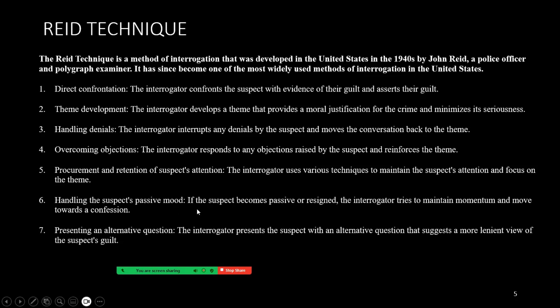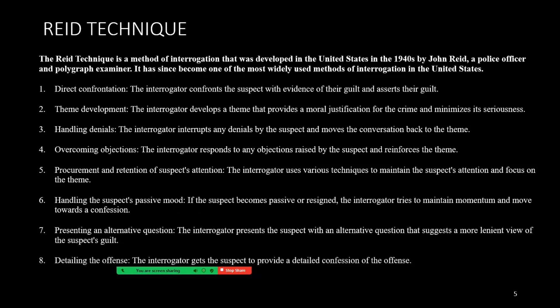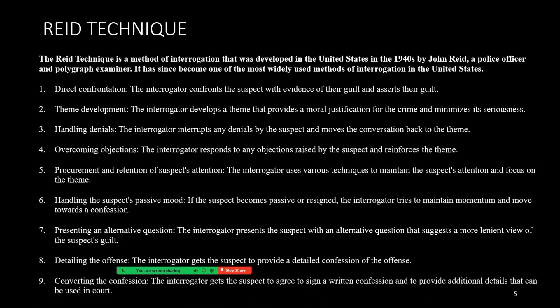Presenting an alternative question: the interrogator presents the suspect with an alternative question that suggests a more lenient view of the suspect's guilt — just working away at trying to get that confession. Detailing the offense: the interrogator gets the suspect to provide a detailed confession of the offense. And then, converting the confession: the interrogator gets the suspect to agree to sign a written version of the confession and provide additional details that can be used in court.